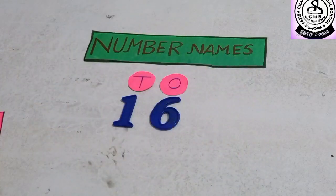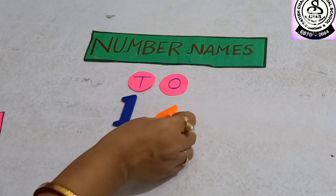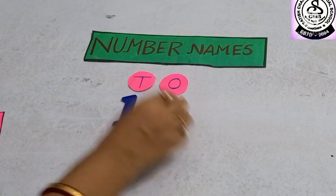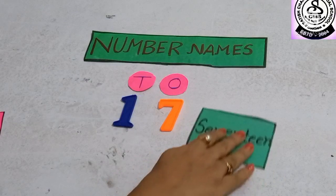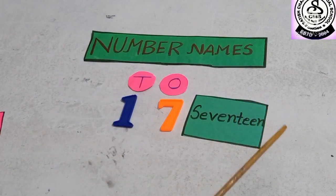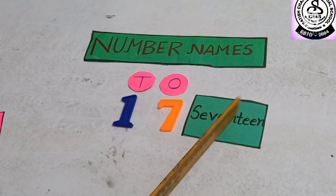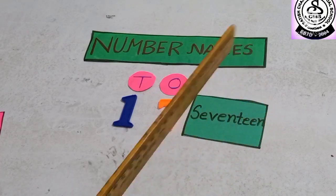What comes after 16? Yes, 17. 1, 7, 17. S-E-V-E-N-T-E-E-N, seventeen.